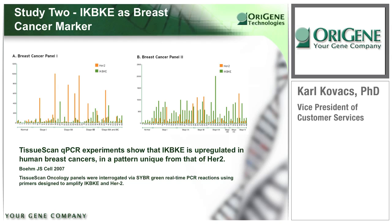The second example is for IKBKE, another breast cancer marker upregulated in approximately 40% of breast cancer patients. Using the breast cancer TissueScan panels, our analysis validated such an expression pattern, but this pattern is indeed different from that of HER2 overexpression. The Cell paper reference is included here for more information.